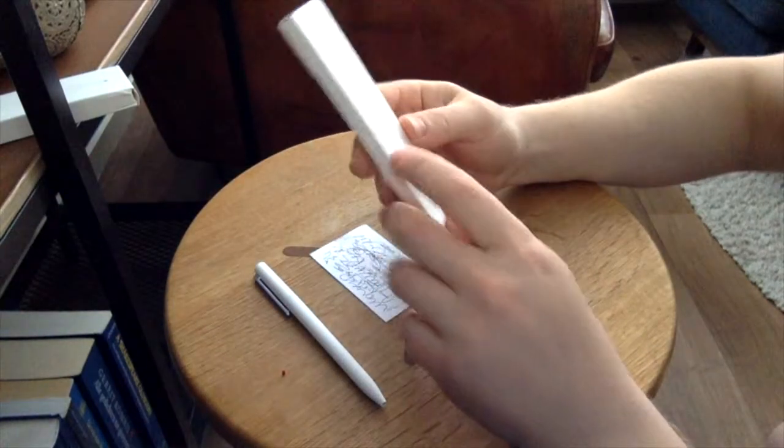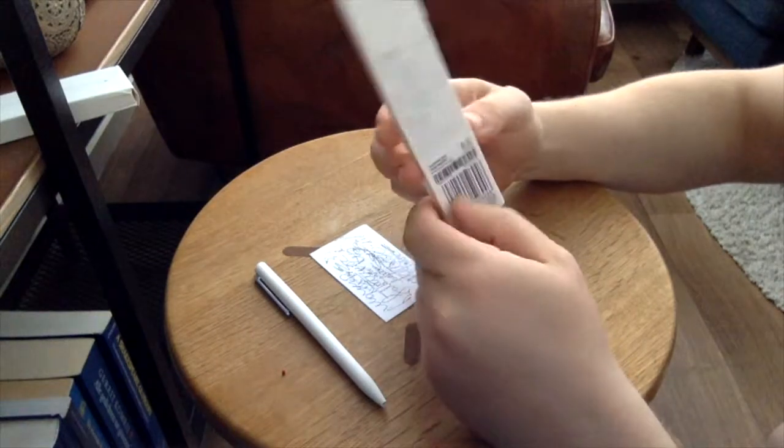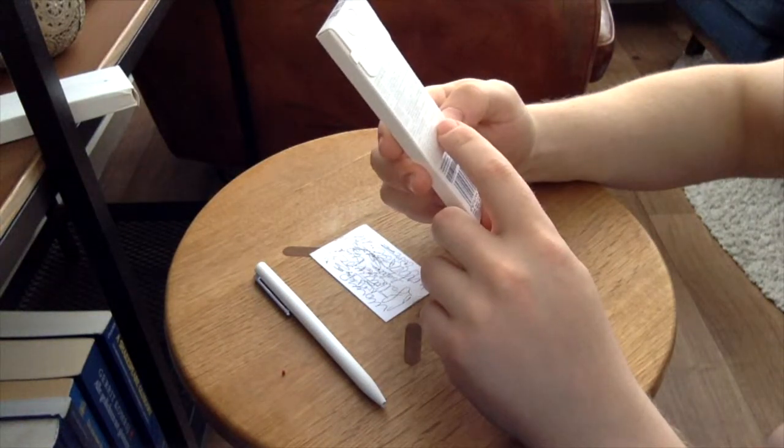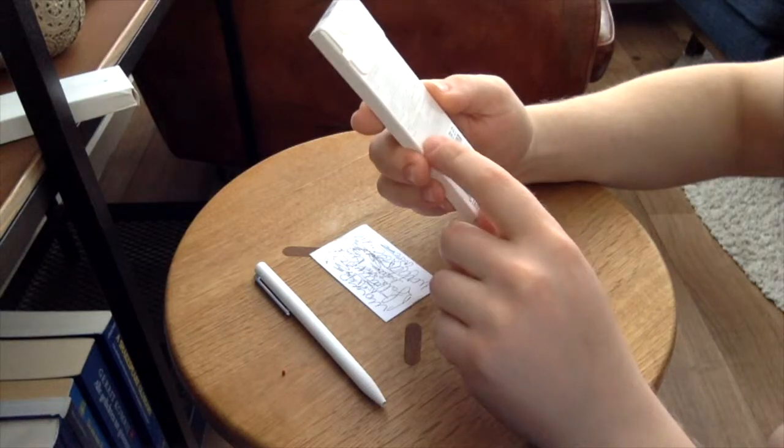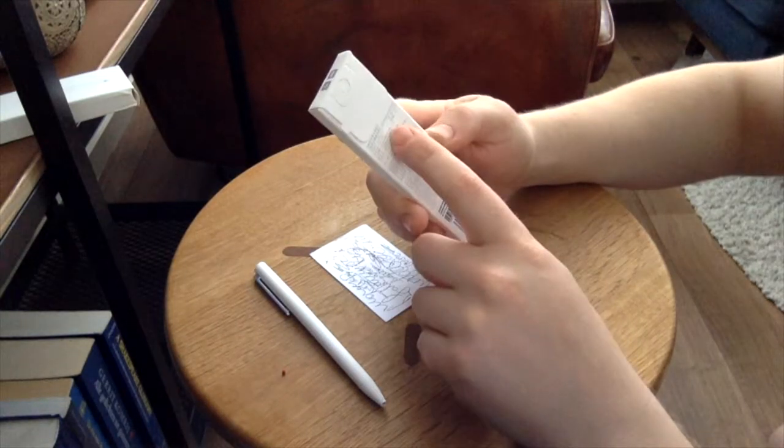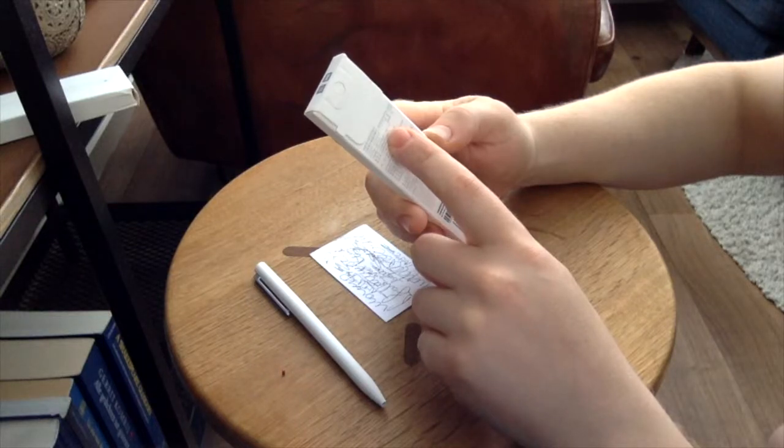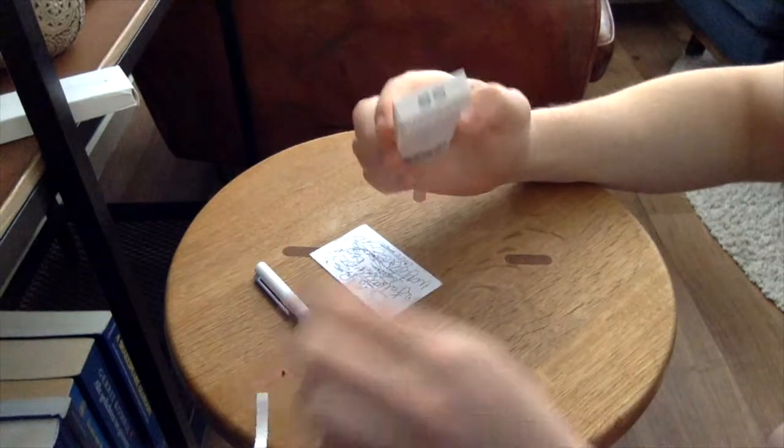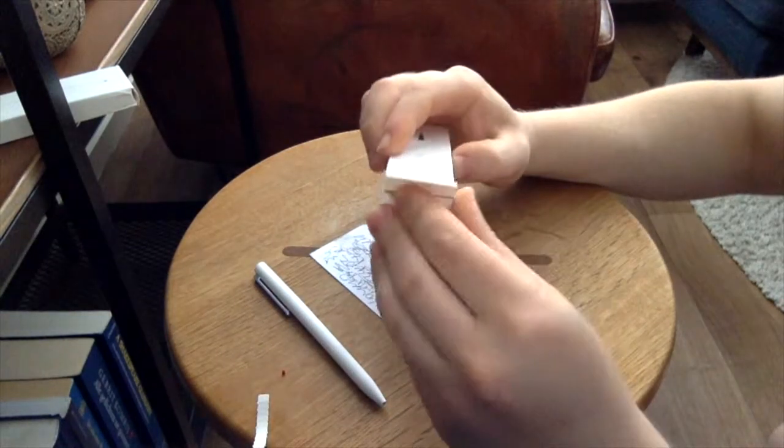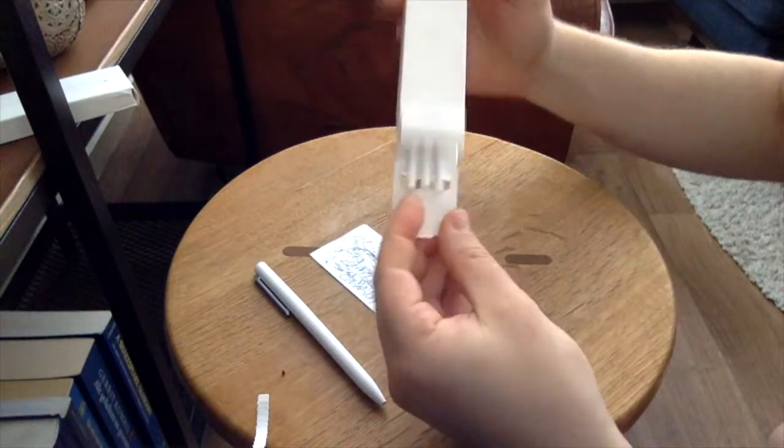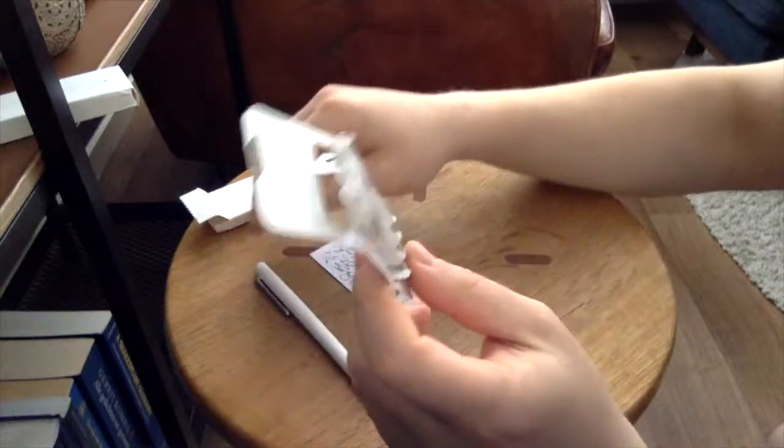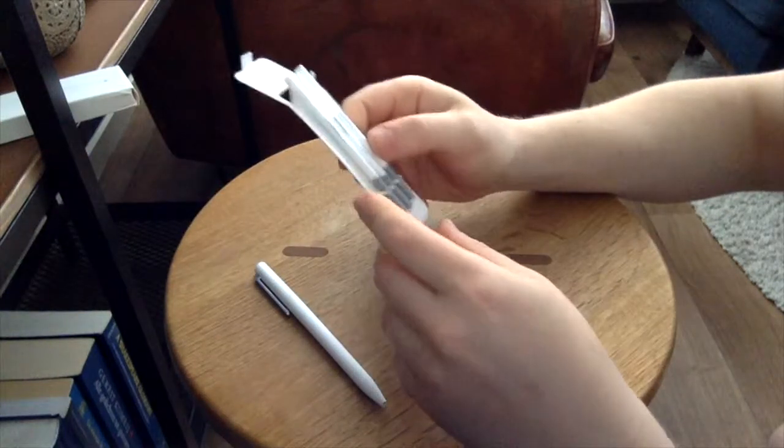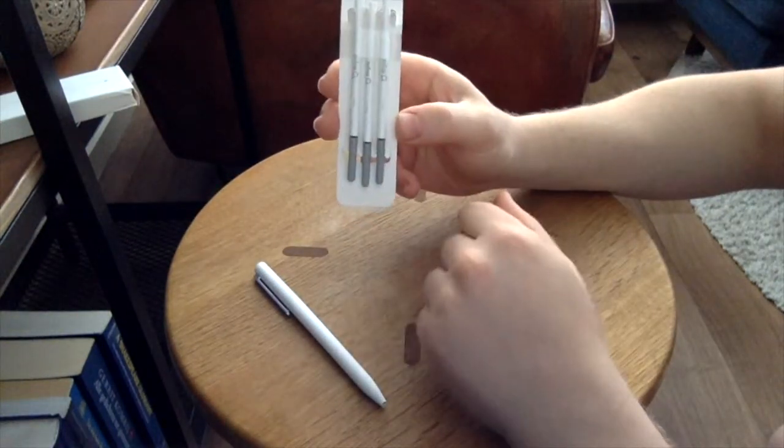The second one is the refill. You get three pieces here. It's gel ink and it expires after two years. It's called the Mi Rollerball Pen Refill. Let's check this out. Let's get rid of these things. This is how it looks.